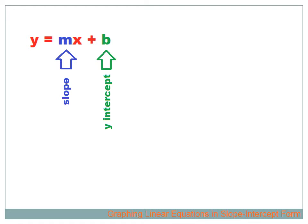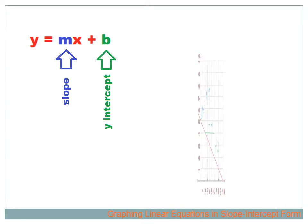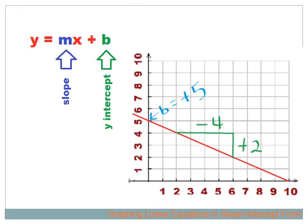What does y-intercept mean? The y-intercept is where the line crosses the y-axis — it's where it intercepts the y-axis. This line hits the y-axis right there at positive 5, so the intercept is B equals positive 5.